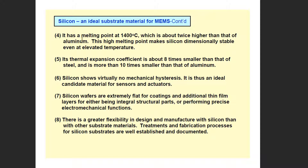The melting point is 1400 degrees Celsius. The thermal expansion is about 8 times smaller than that of steel. That is why silicon can withstand the heat.